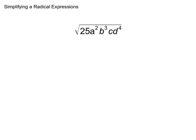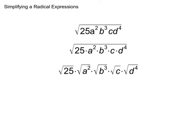Start by breaking the expression apart so each number and variable is its own radical. Simplify each radical. Multiply together all terms left under their radicals and place that new term under the same radical. Multiply together all terms factored out and place that new term in front of the radical.